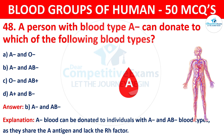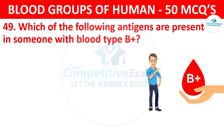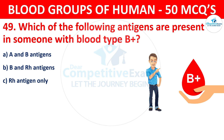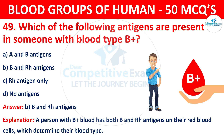Question 49: Which of the following antigens are present in someone with blood type B positive? The correct answer is B, B and RH antigens. A person with B positive blood has both B and RH antigens on their red blood cells, which determine their blood type.